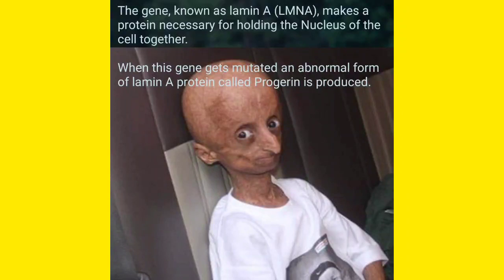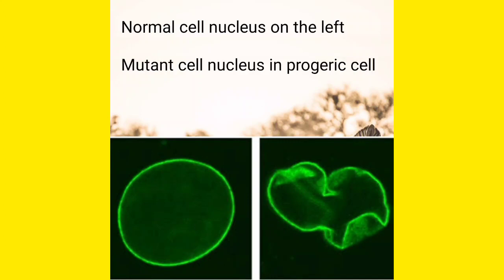This abnormal Lamin A produces a defective nucleus. I will show you a picture of the defective nucleus in a progeria patient. The left side shows the normal cell nucleus, and the right side shows the mutant cell nucleus in case of a progeric cell. See how the nucleus has curved and clumped together — this is because the Lamin A gene has been mutated, and a single gene mutation causes this crumpled-like nucleus.